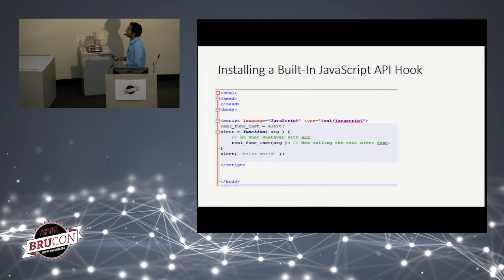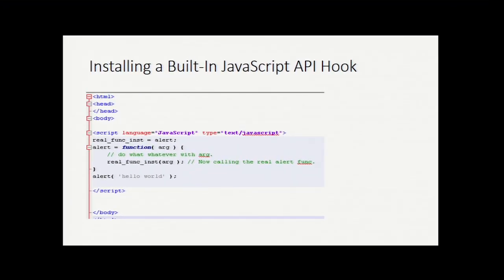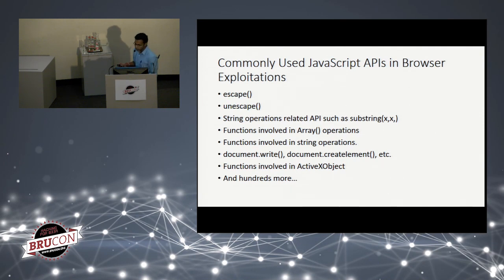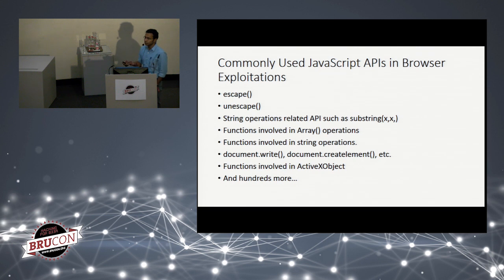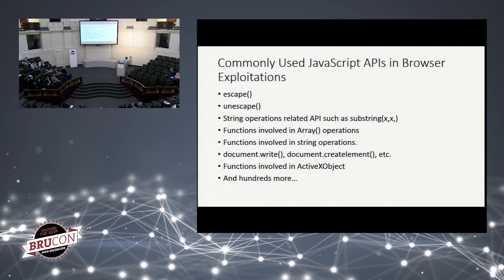This code shows how JavaScript API hooking works. We hook the alert function by saving its original instance in a variable called realAlertFunction, then completely overwrite the alert function with our own — which still calls the original so it appears legitimate. Commonly hooked APIs in browser exploitation include: escape, unescape, string operation APIs, array operations (array push, array pop, new Int32Array), document.write, document.createElement, ActiveX object creation functions, and hundreds more.